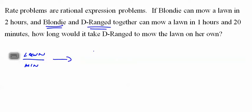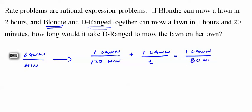Blondie and D-Ranged both have a rate. When we add them together that's the rate they do the last one, and you can only do it this way. Some other ways you could do it but this is the best way. So Blondie mows lawn in 2 hours, so she does 1 lawn in 120 minutes. D-Ranged we don't know so we call it T. Together 1 lawn in 80 minutes.